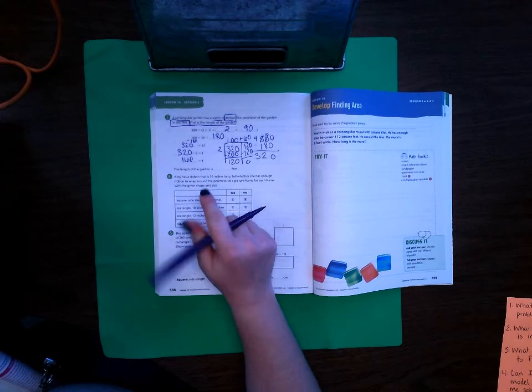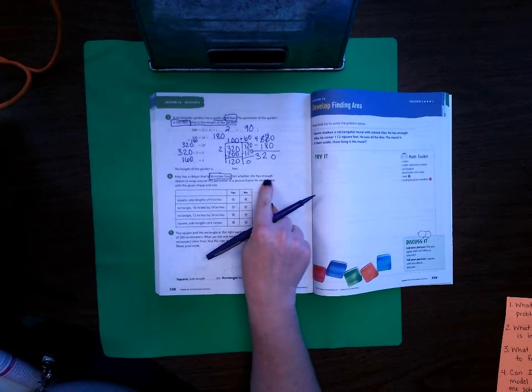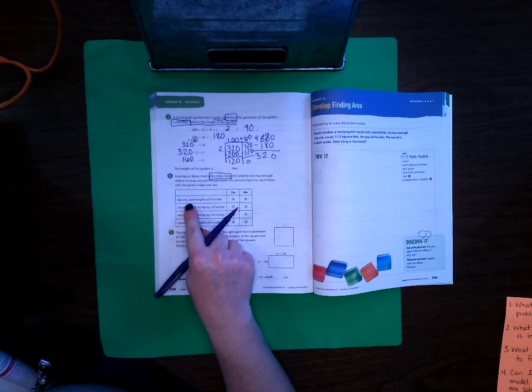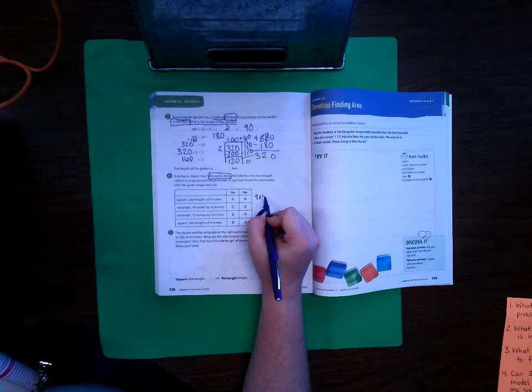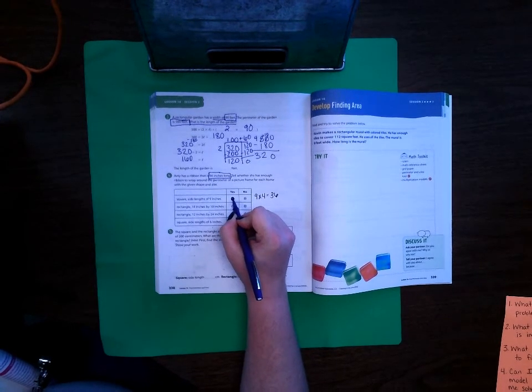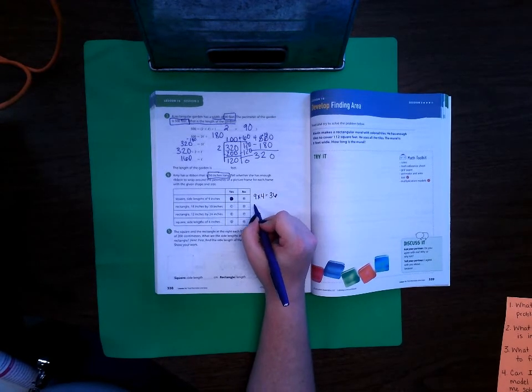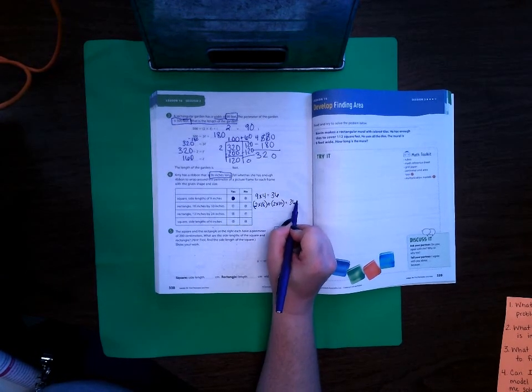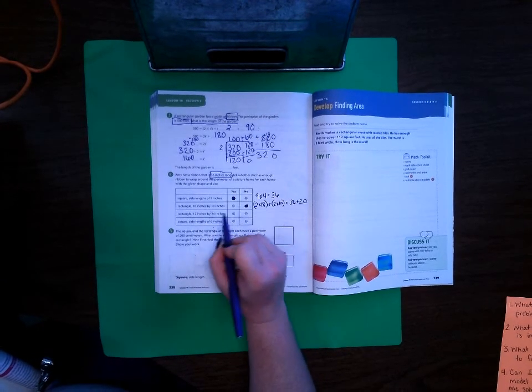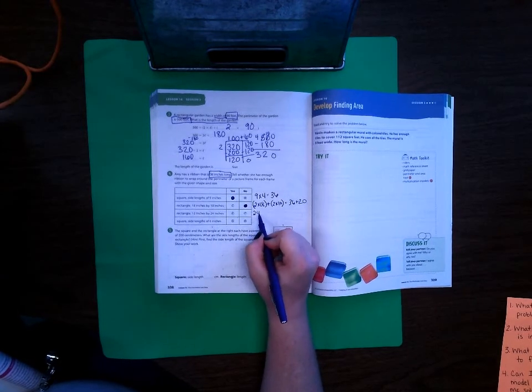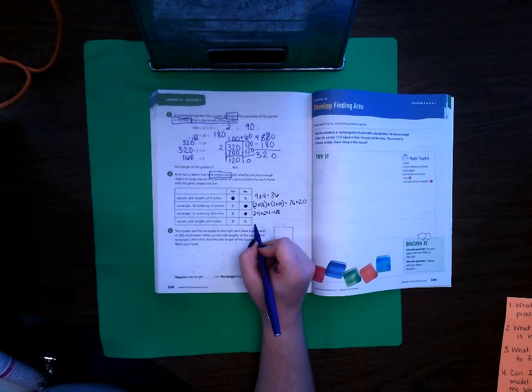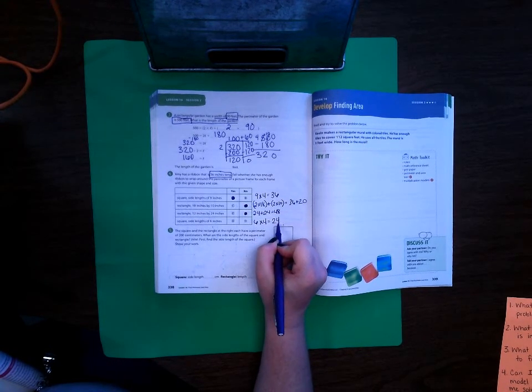Amy has a ribbon that is 36 inches long. Tell whether she has enough ribbon to wrap around the perimeter of a picture frame for each frame with the given shape inside. First is a square and the side lengths are 9 each. So it would be 9 times 4 equals 36. So the answer is yes. A rectangle that is 18 inches by 10 inches. So 2 times 18 plus 2 times 10. So that would be 36 plus 20. That's going to be too much, too big. A rectangle that's 12 by 24. Well, 24 plus 24 is 48. So that one's definitely no. A square that has side lengths that are 6 inches. 6 times 4 equals 24. So the answer is yes.